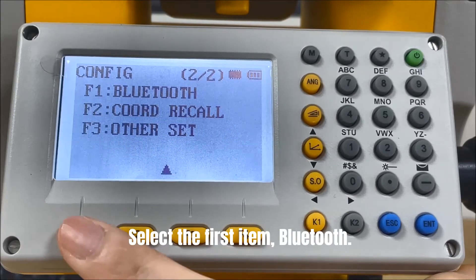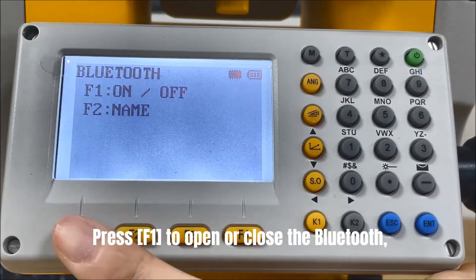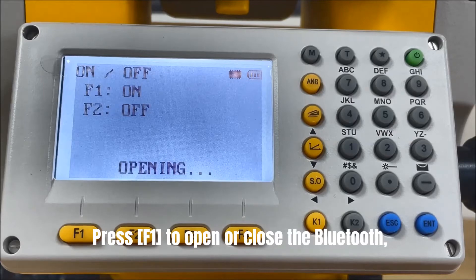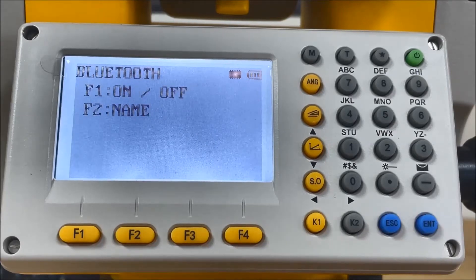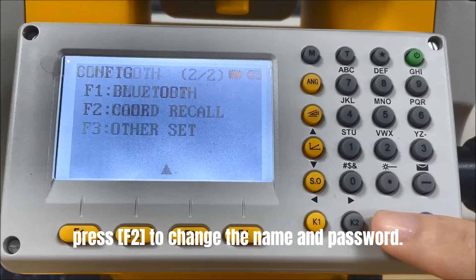Select the first item, Bluetooth. Press F1 to open or close the Bluetooth. Press F2 to change the name and password.